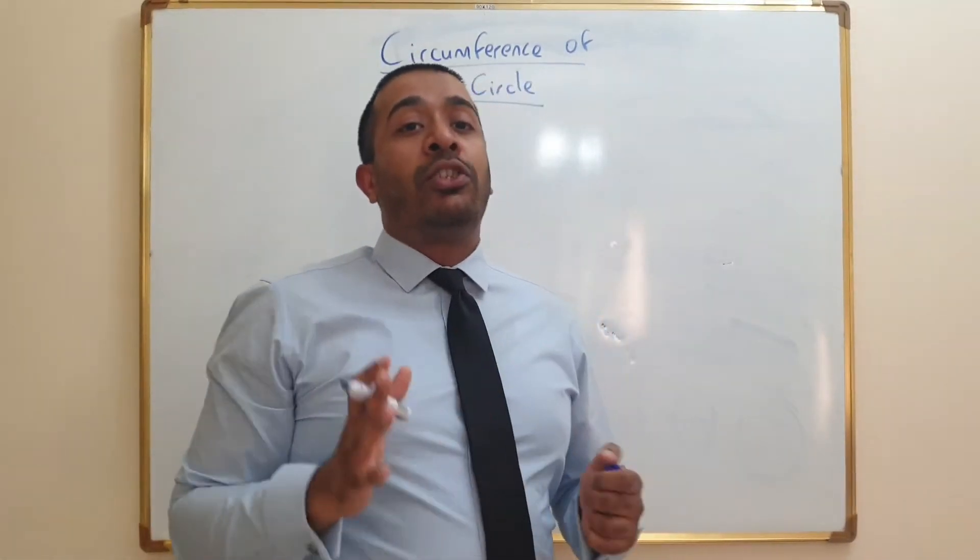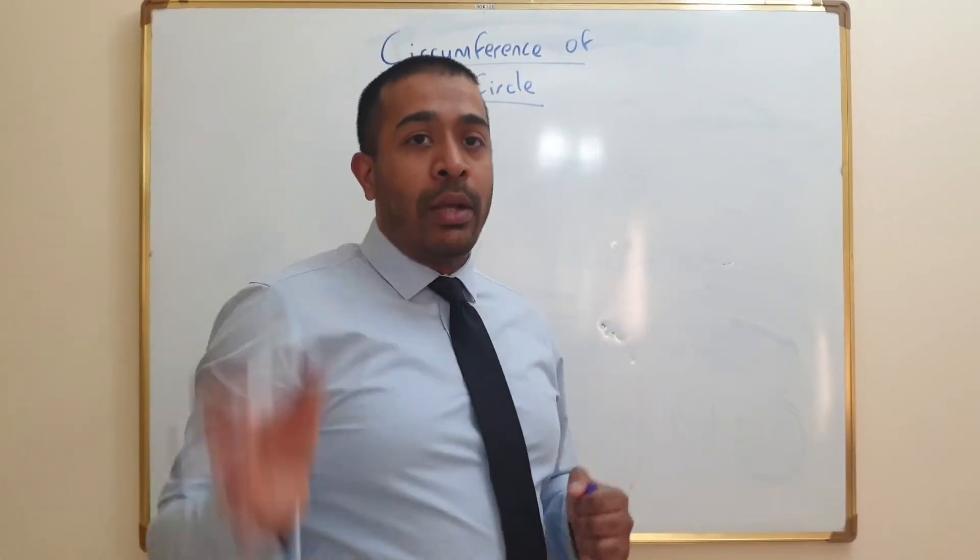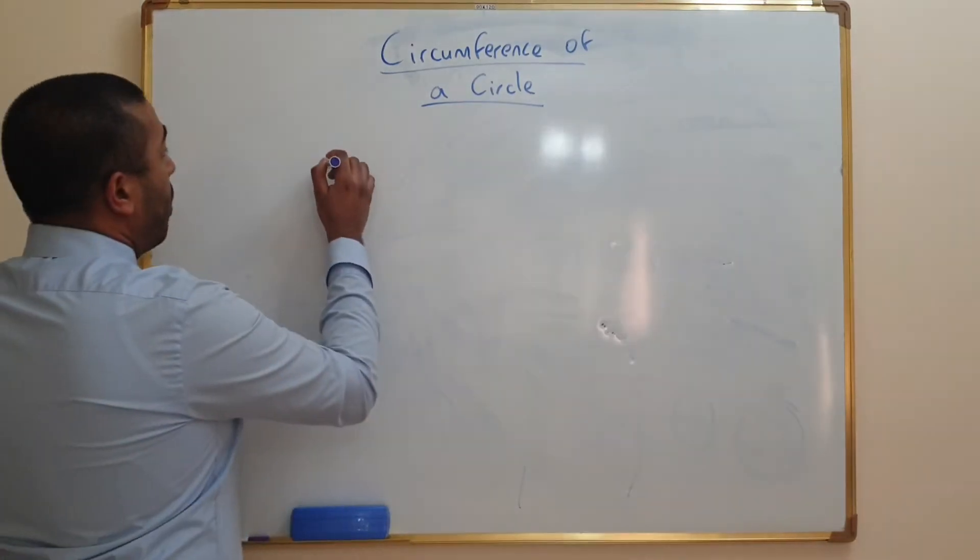The circumference is just a special word for the perimeter, all the way around the outside. So here we have a circle.